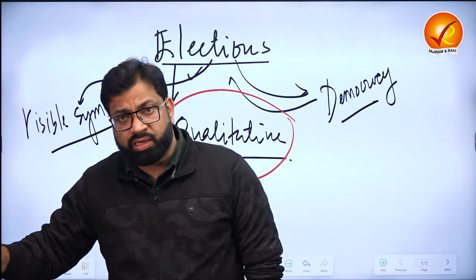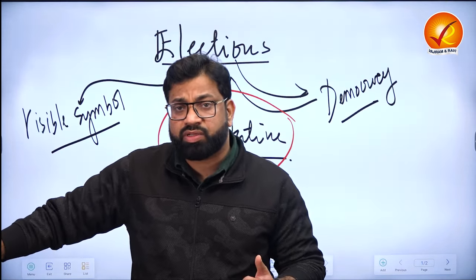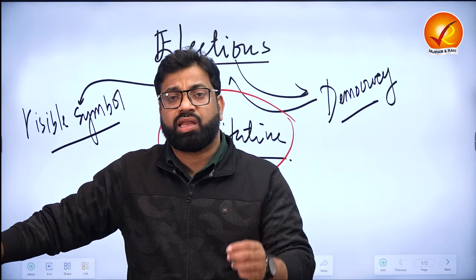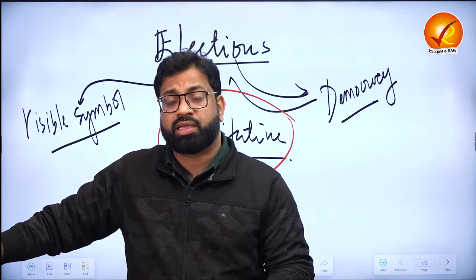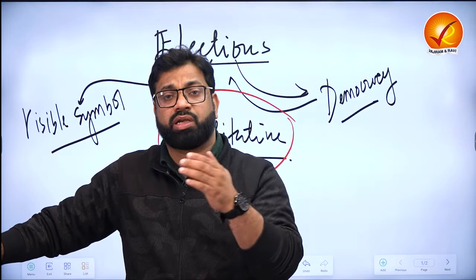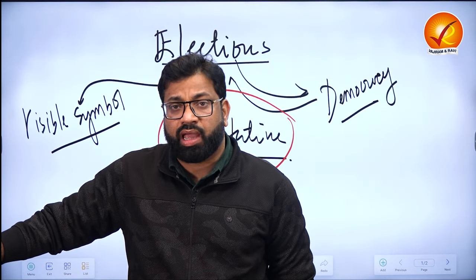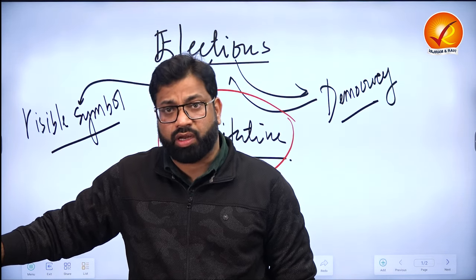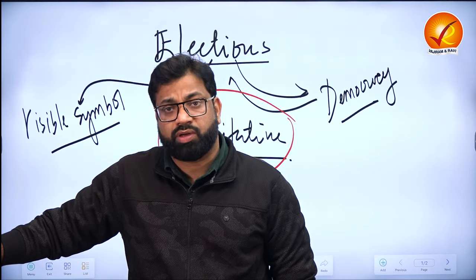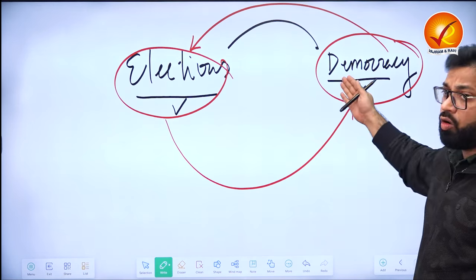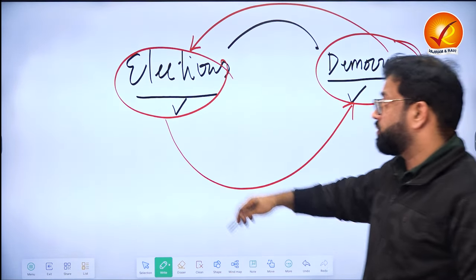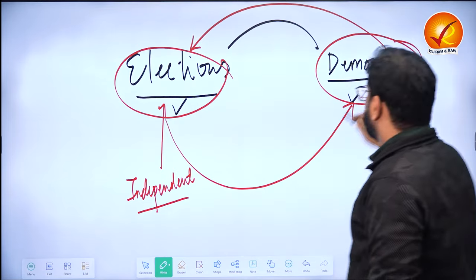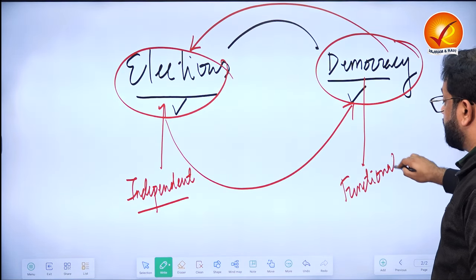When would we conclude that elections being conducted make it a democracy? Only when elections are qualitative. What do I mean by qualitative elections? The body conducting elections is independent. People who are voting really have a choice. The whole process of conducting elections and people voting for their representative is free and fair. Only independent elections can take us to a functioning democracy.